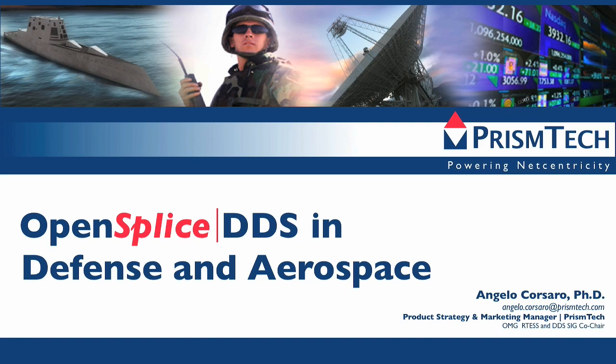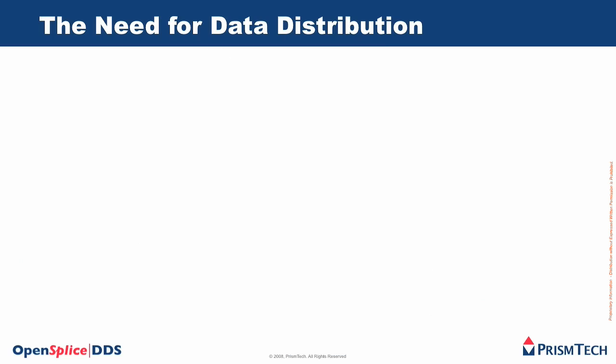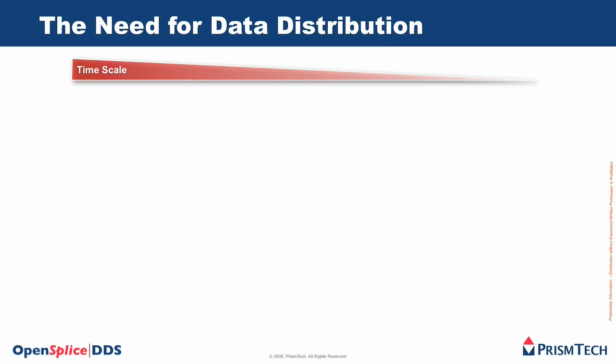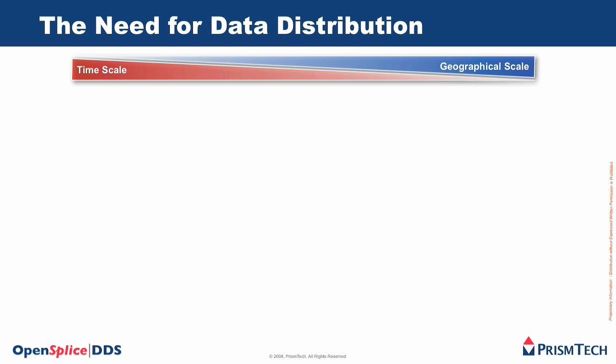The vast majority of defense and aerospace applications are characterized by the common need of distributing data. This data typically needs to be distributed at different time and geographical scales. If we consider exactly these two dimensions, in this continuum we can identify several discrete points that will serve as examples for understanding the kind of requirements that defense and aerospace applications have in terms of data distribution.